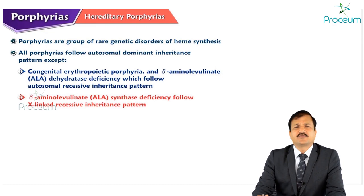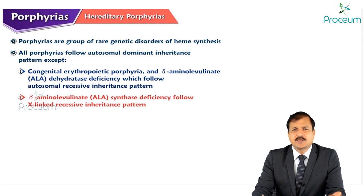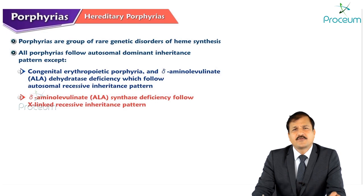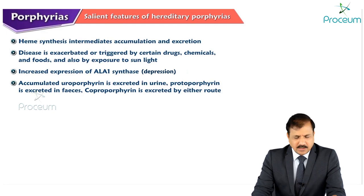Porphyrias are a group of rare genetic disorders of heme biosynthesis. All porphyrias follow autosomal dominant inheritance pattern, except congenital erythropoietic porphyria and delta-aminolevulinic acid dehydratase deficiency, which follow autosomal recessive inheritance pattern, and delta-aminolevulinate synthase enzyme deficiency, which leads to sideroblastic anemia and follows X-linked recessive inheritance pattern. Other than these three, all other porphyrias follow autosomal dominant inheritance pattern.